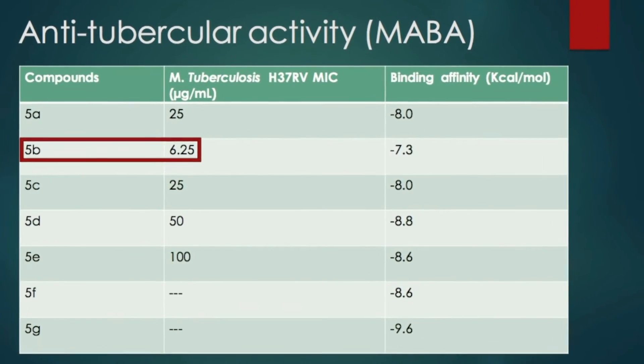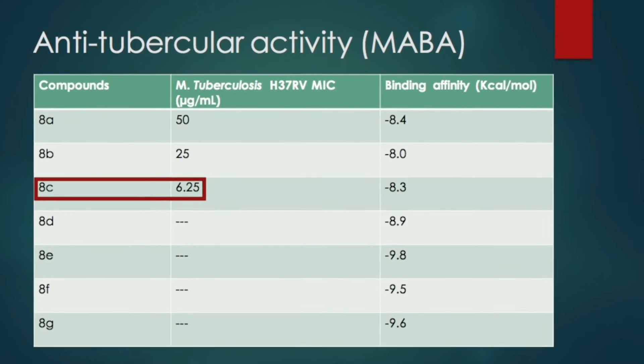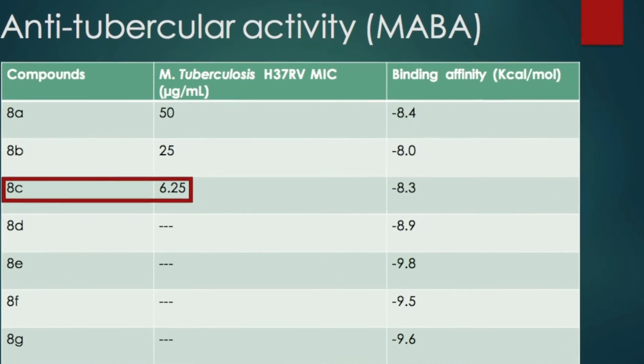All synthesized compounds were also screened for their antitubercular activity using the micro-broth dilution method. Accordingly, compound 5B and compound 8C were found to exhibit very high antitubercular activity. Structurally, this was translated as the presence of an amide or guanidine group at position 3 of quinazolinone greatly increasing the antitubercular activity.